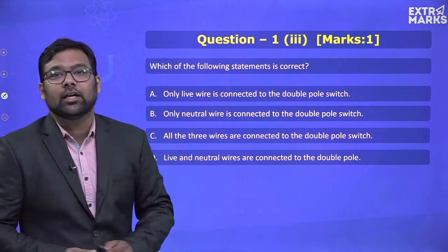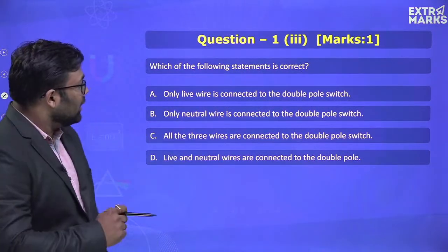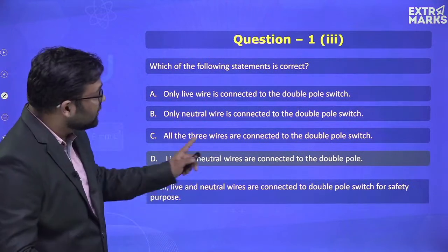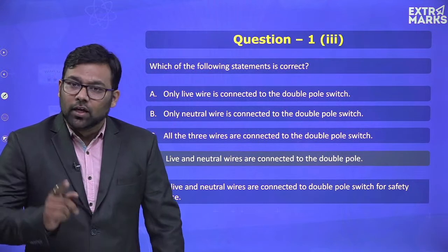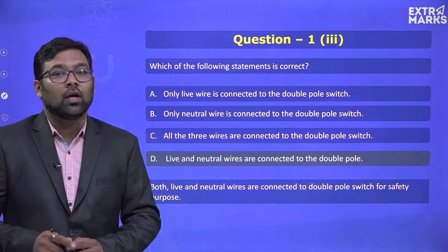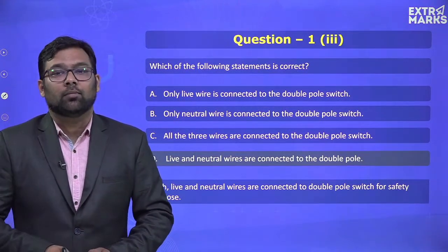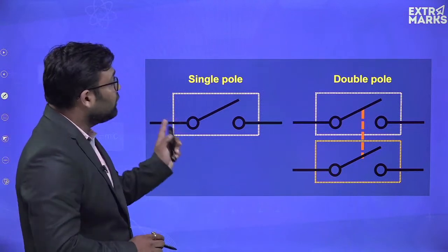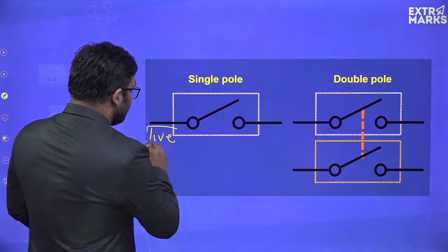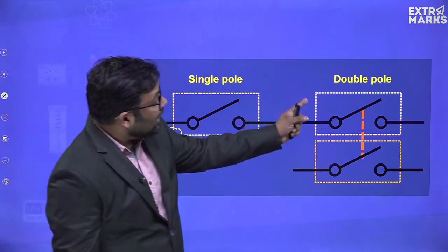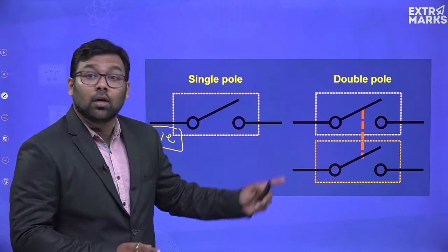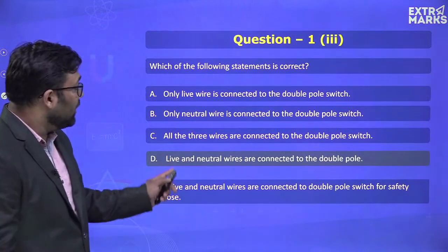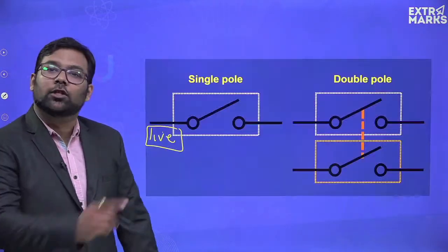This question asks which statement about the double pole switch is correct. The answer is D: both the live and neutral wires are connected to the double pole switch. With a single pole switch, only the live wire connection is broken. But with a double pole switch, both live and neutral are cut, ensuring no chance of mishap. From now on, remember: a double pole switch connects both live and neutral wires.